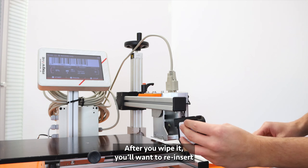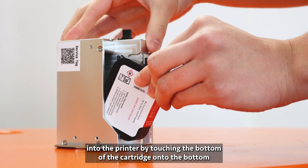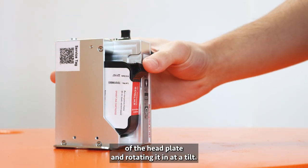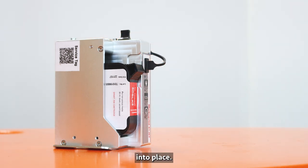After you wipe it, you want to reinsert it into the printer by touching the bottom of the cartridge onto the bottom of the head plate and rotating it in at a tilt. When it's in place, just push it to clip it into place.